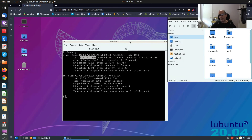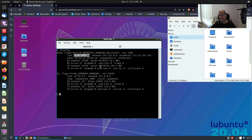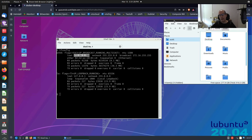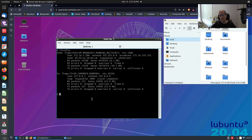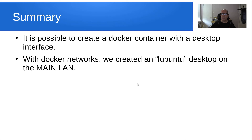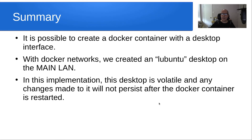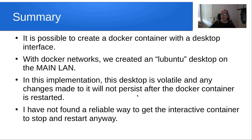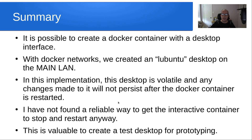All of this works, and it is a great way to have a throwaway prototype system. Just keep in mind that if you stop the container, you're going to have all your non-volatile data lost. So it's good for prototyping and a once-off attempt. In summary, it is possible to create a Docker container with a desktop interface. With Docker networks, we created a Lubuntu desktop on the main LAN. This desktop is volatile, and any changes made will not persist after the container is restarted. This is valuable to create a test desktop for prototyping.